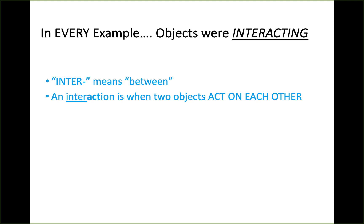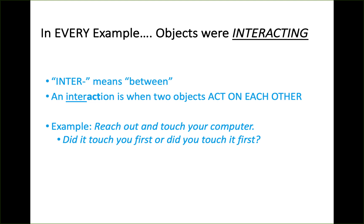'Inter' means between, so 'interacting' means two objects are acting on each other. For example, reach out and touch your computer keyboard or monitor — did you touch it first, or did it touch you first? The answer is neither: both touches happened simultaneously. You reached out and touched the computer; the computer in turn touched you. Both touches happened at the same time.